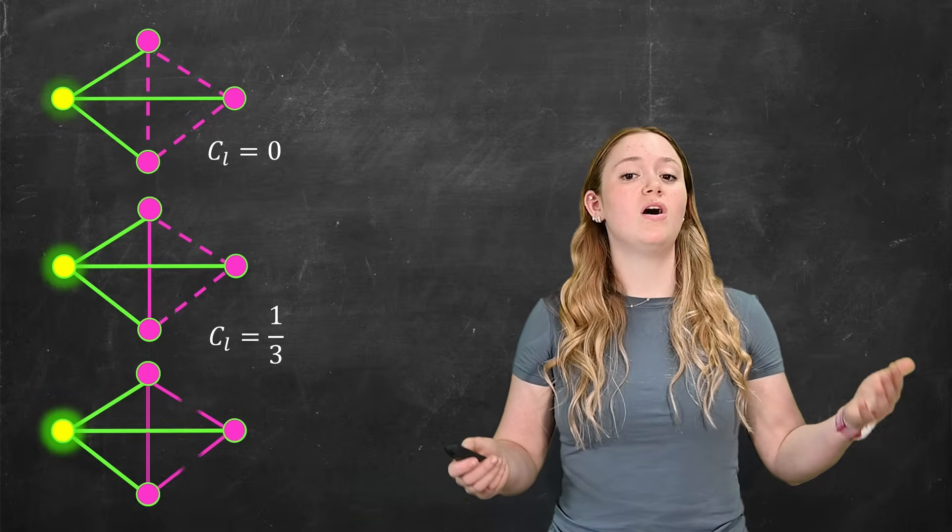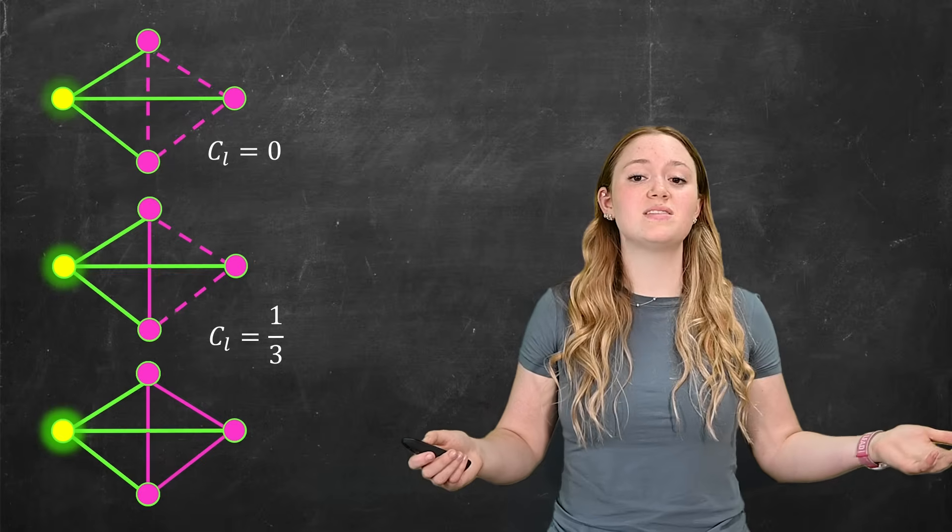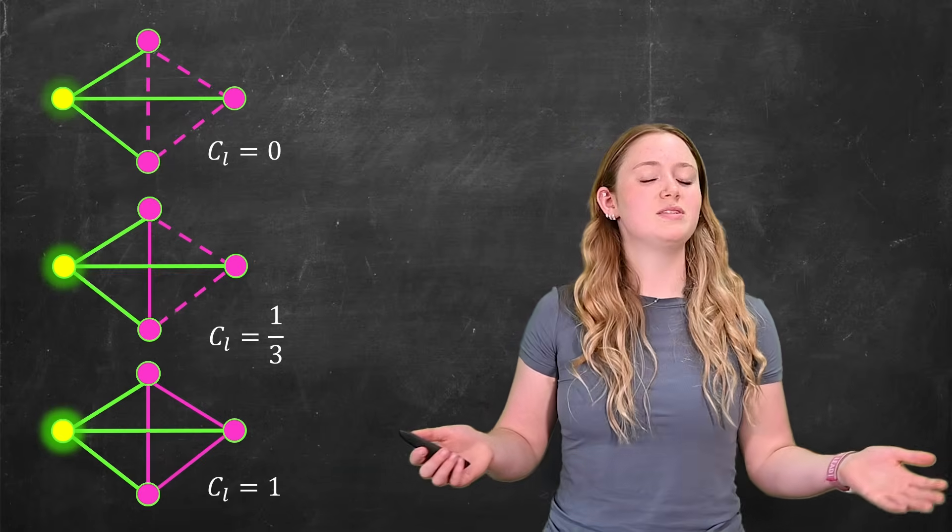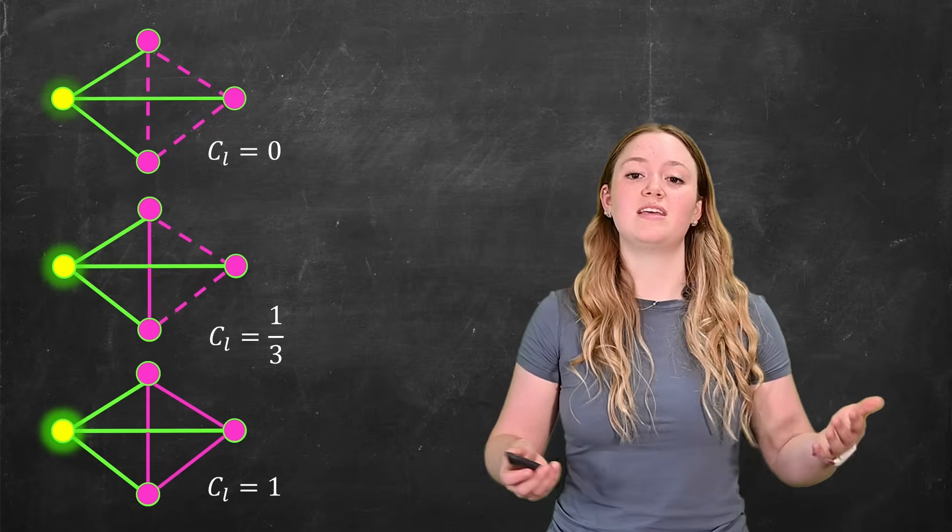Well, what if there's connections between all of the neighbors? In this case, we have a local clustering coefficient of one, which is the highest that it could possibly be. This helps to explain if a group of neighbors is a clique or not.